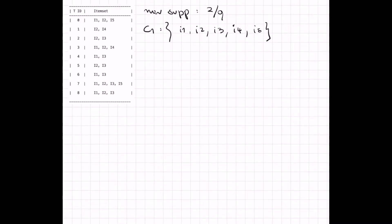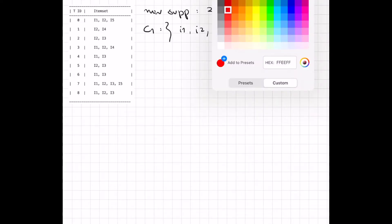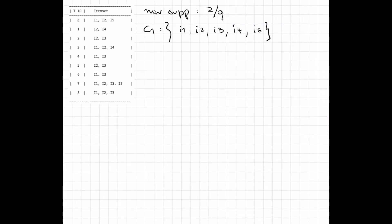I1 exists six times across the transactions, appearing in T0, T3, T4, T6, T7, and T8. Similarly, I2 exists seven times, I3 exists six times, and I4 and I5 each exist two times. All of them are approved because they have a count greater than or equal to two out of nine, so we can build L1, the set of frequent item sets of size one, which in this case equals C1.